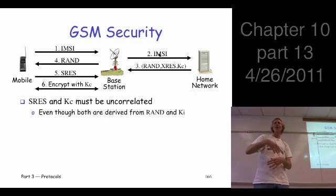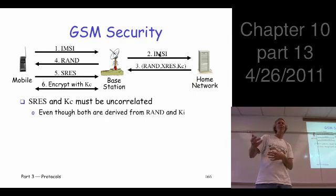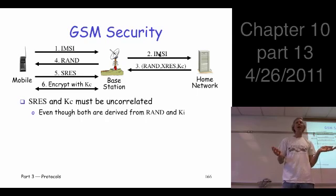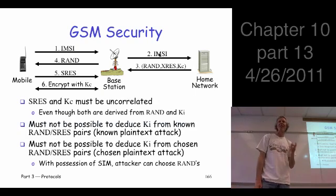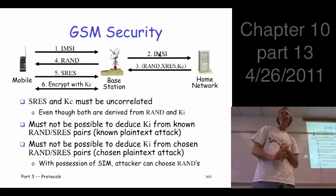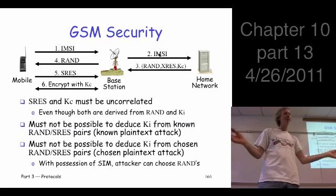If you see a bunch of RAND/SRES pairs, can you determine Ki? It's similar to a known-plaintext attack on a cipher. You could try a forward search — just guess values for Ki — but it's 128 bits, so you're never going to find it by brute force. As long as there are no correlations and the hash function is good, it's secure. Unfortunately, the hash function is bad. A3 is a bad hash function, and A5-1 is pretty bad too. Both were designed in violation of Kerckhoffs's principle, deployed in millions of cell phones, and then someone figured out they were bad.